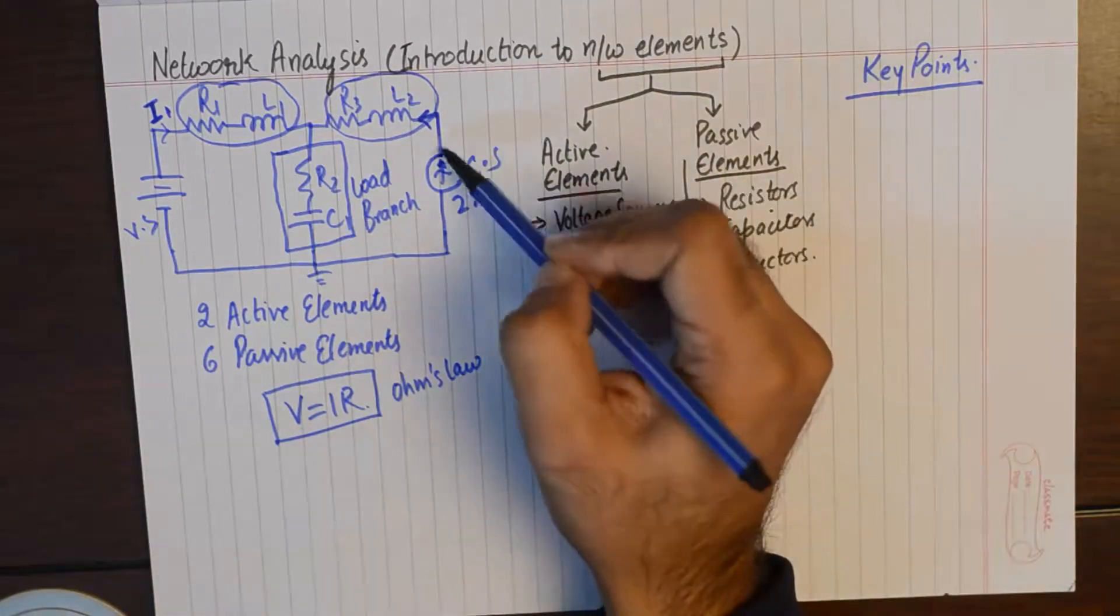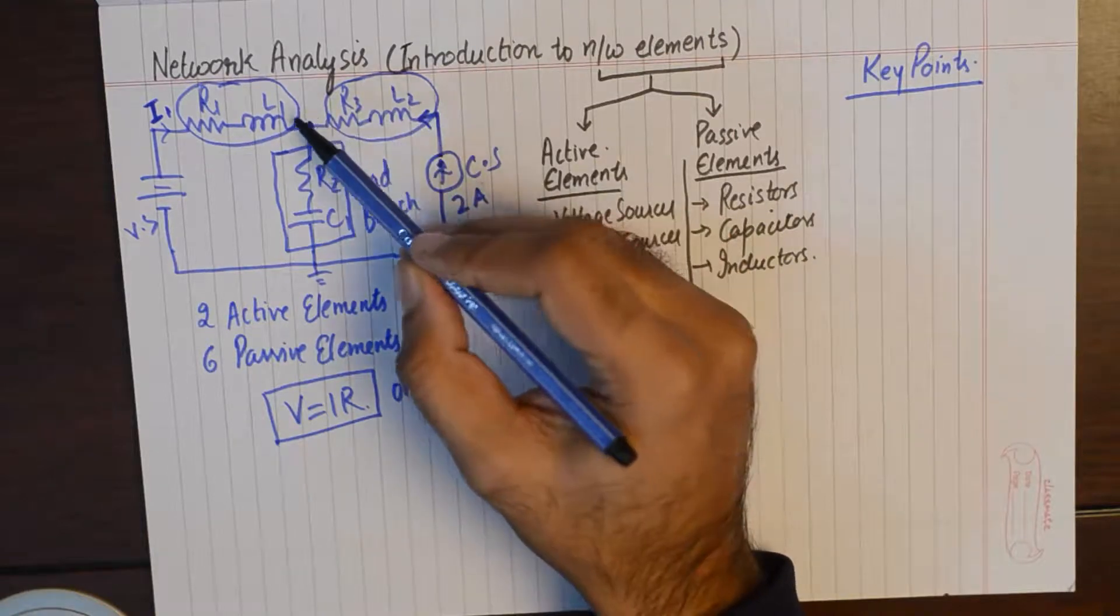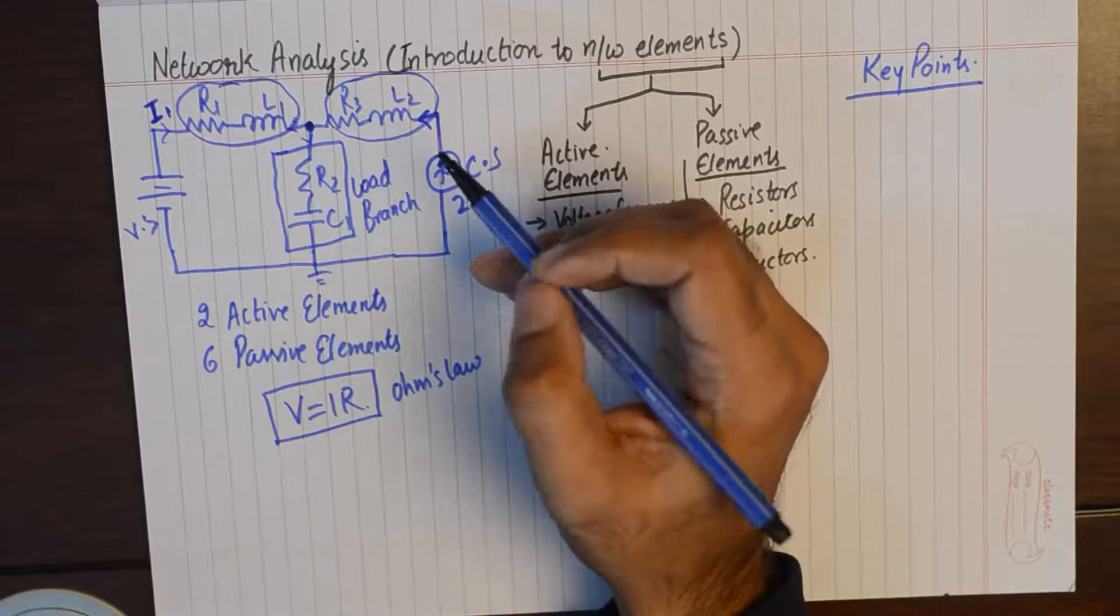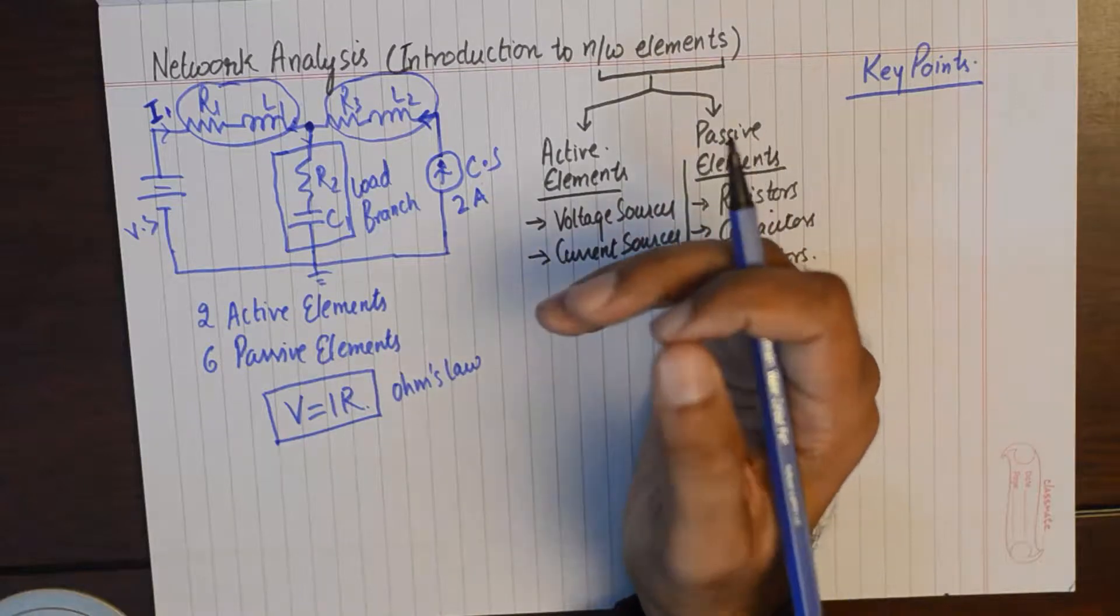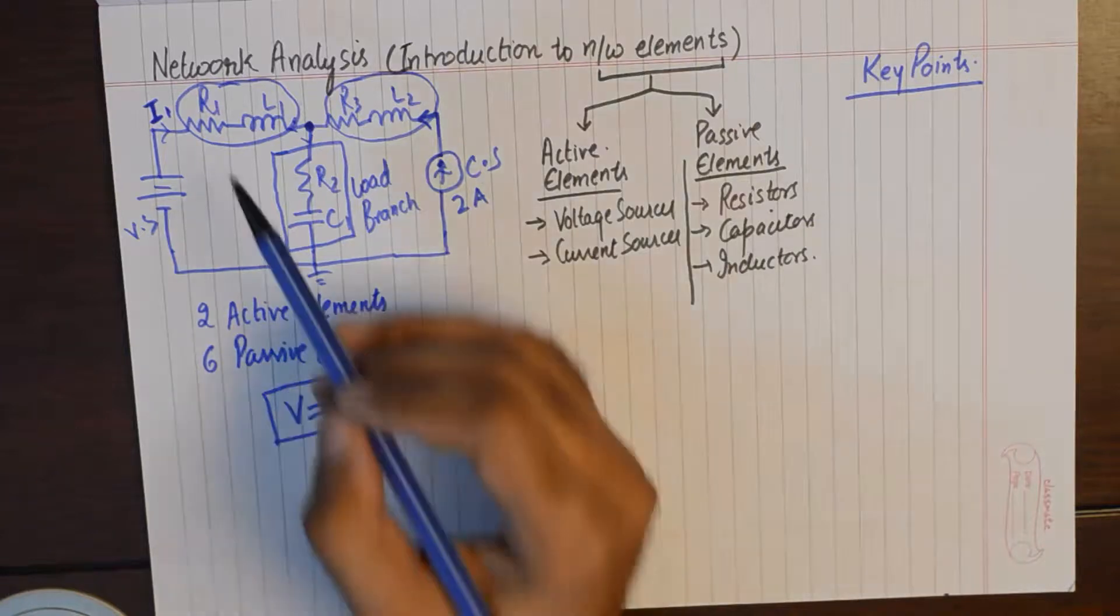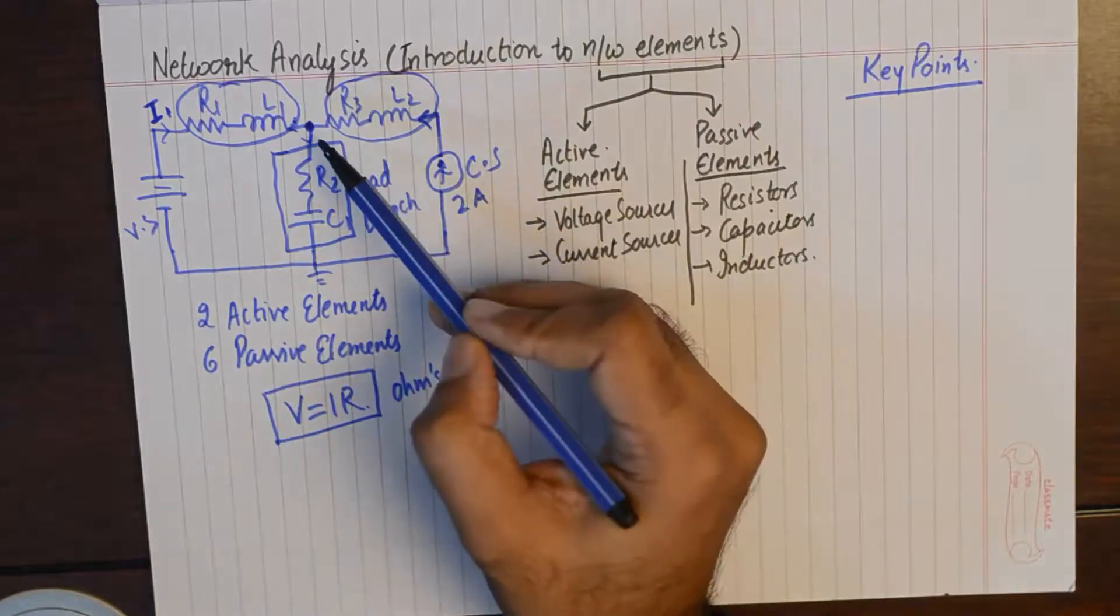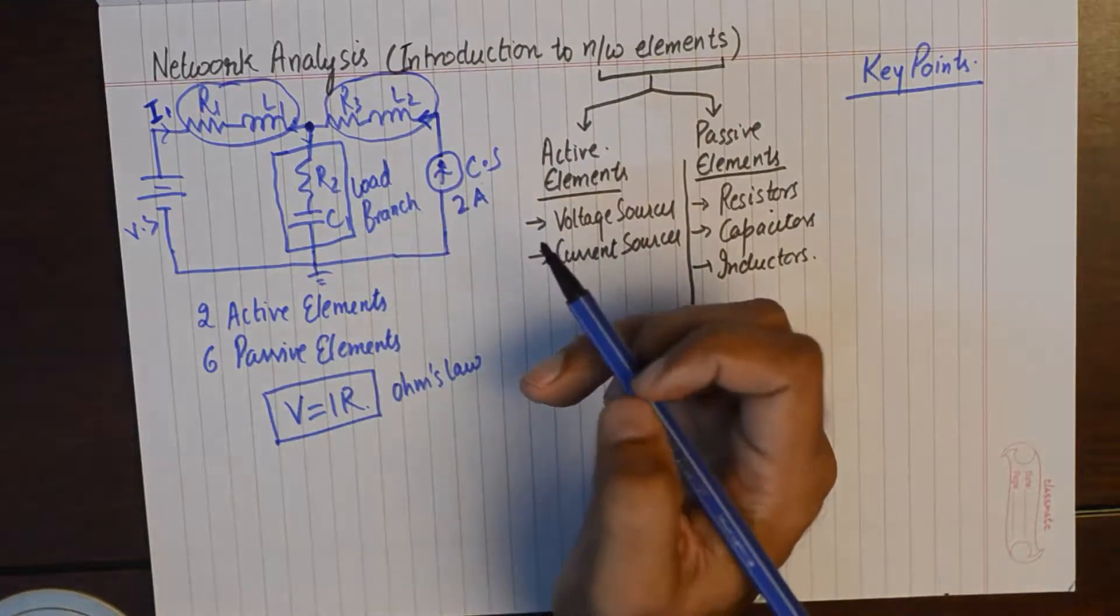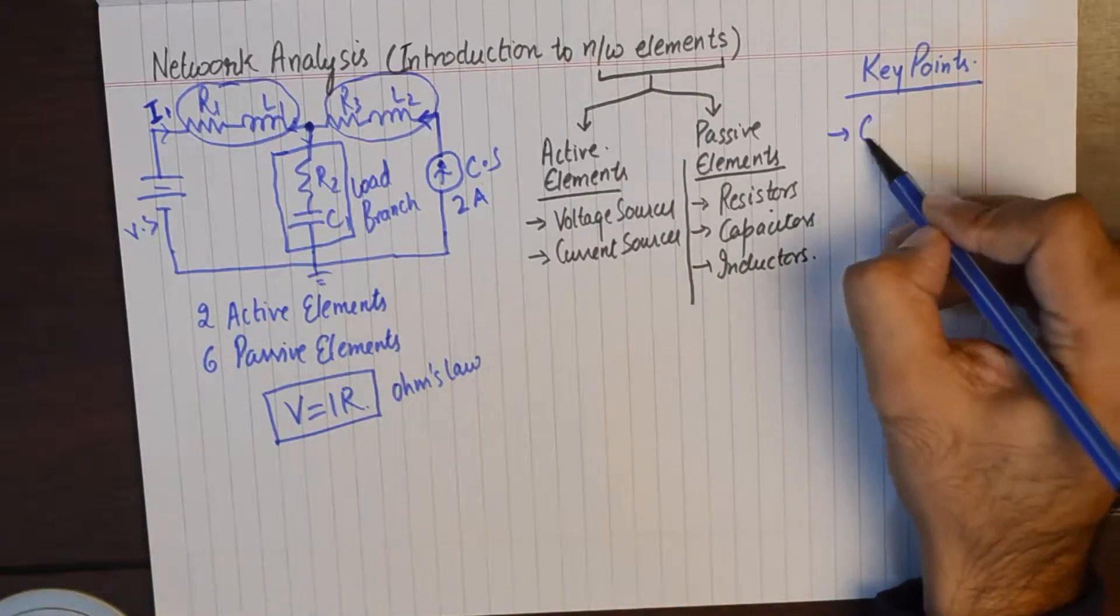Of course when this current passes through this node it has to make choices where it will divide itself into two parts in certain ratios. And same happens with this current when it comes to this node, it divides itself into two parts. But the fundamental key point is...